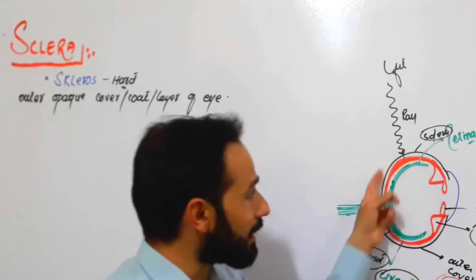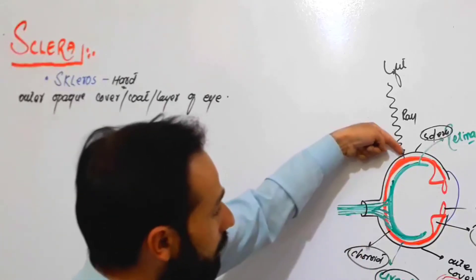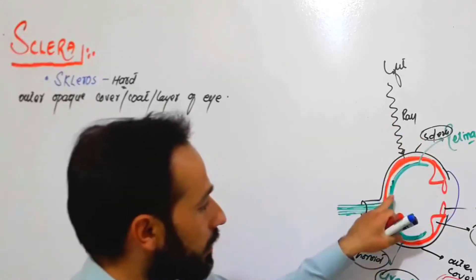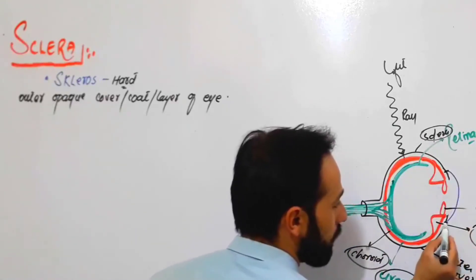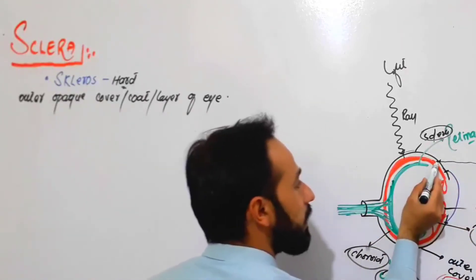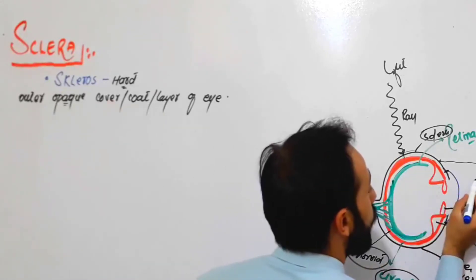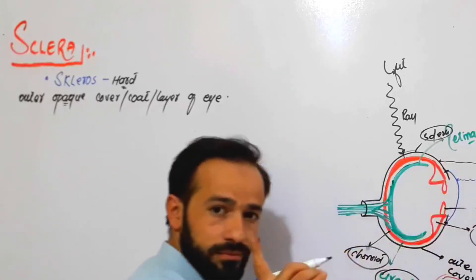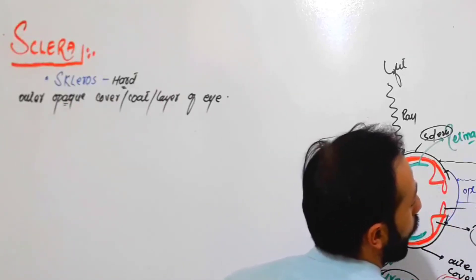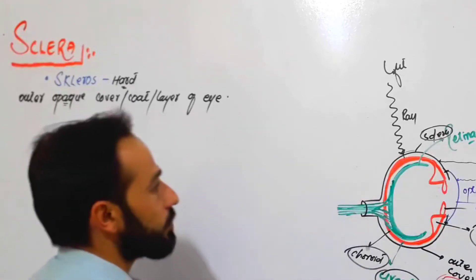The sclera is composed of a special type of collagen fibers, and these collagen fibers have different arrangements so they do not let light pass through the sclera to hit the choroid layer and enter the retina. From here to here — five-sixths of the eye — is covered by the sclera, so light falling on the sclera is blocked. Light can only pass through the optic zone of the cornea, as discussed in the previous lecture.